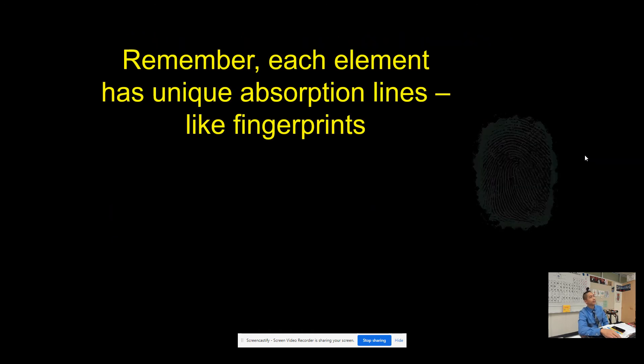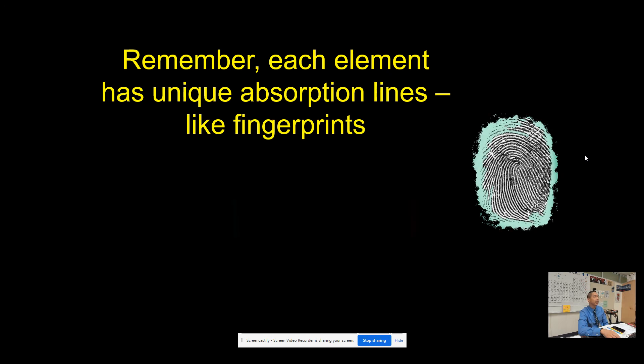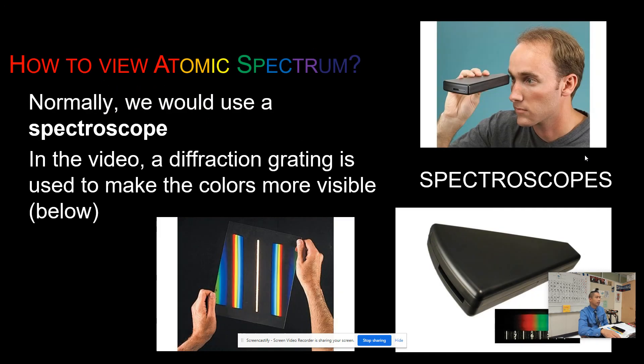Remember that each element has unique absorption lines, similar to fingerprints. How do we view atomic spectrums? We would use a device like this, called a spectroscope. If you're in my class physically, I'd let you use a spectroscope, but since you cannot be here, I'm going to show you a video where another teacher uses a diffraction grating, which will help make the colors much more visible.